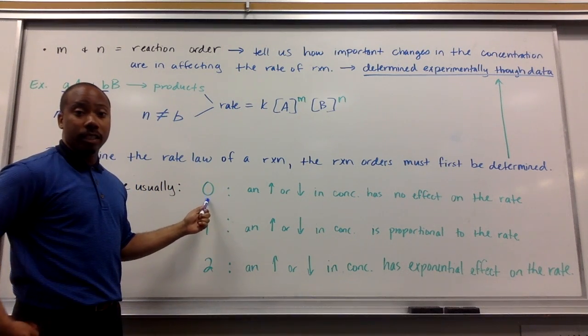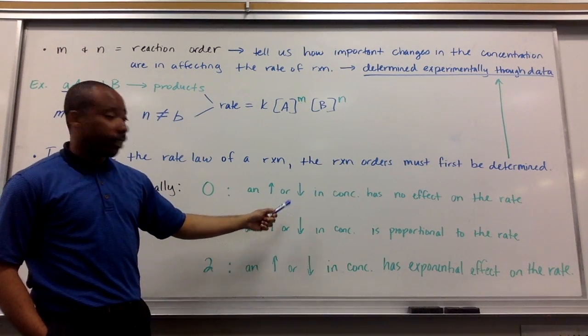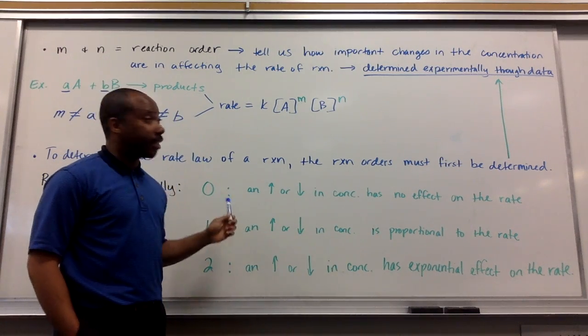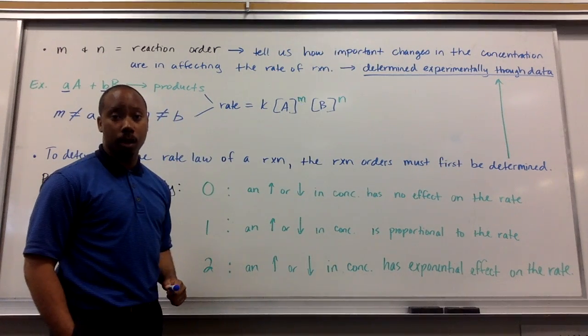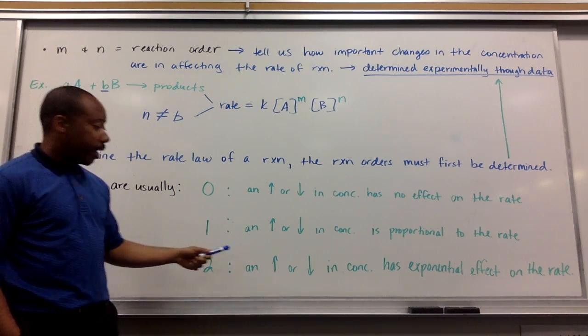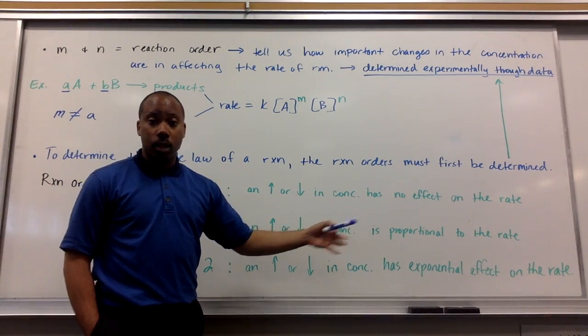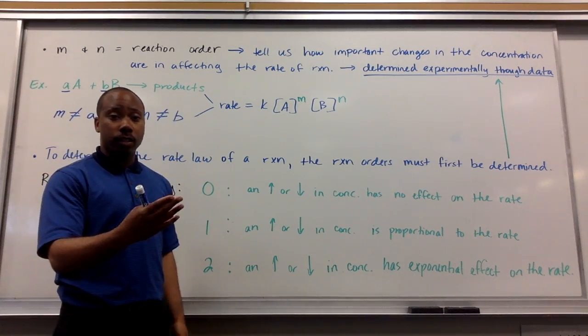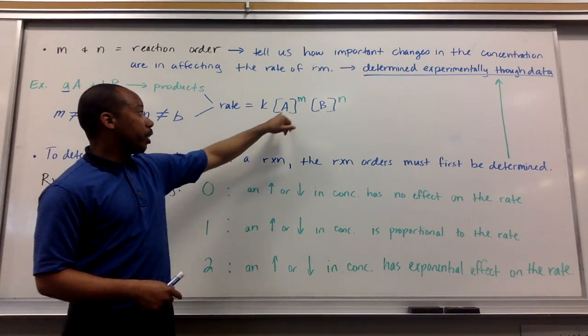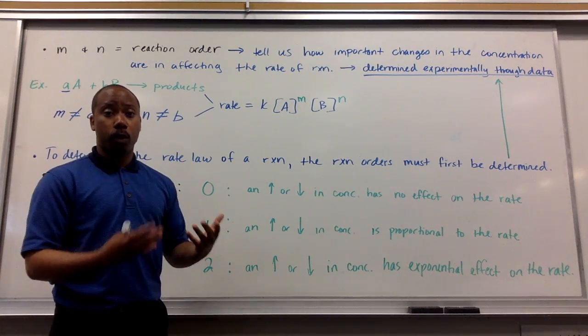So, if your reaction order is 0, 0 is up here. What that means is, an increase or decrease in your concentration has no effect on the rate. And mathematically, that should make sense if you have something raised to a power of 0. If your reaction order is 1, an increase or decrease in the concentration is proportional to the rate. If I increase my concentration, if I have a 1 here, next to the A, if I increase A's concentration, if I double it, the rate will also double. It's proportional in that way.